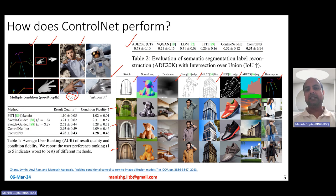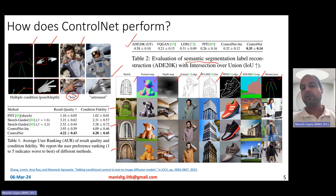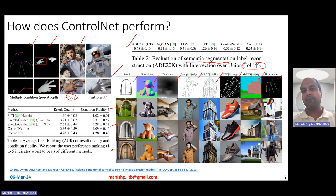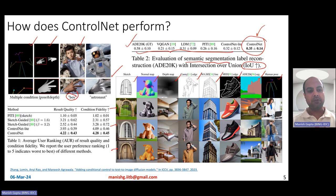For quantitative evaluation, they take segmentation labels of images and ask the model to create images based on those segmentation maps. Once the images are created, they pass them through the same semantic segmentation model and get back the segmentation map. So: start from segmentation maps, generate images using ControlNet, apply a segmentation algorithm, and compare initial and final segmentations via IOU. They found that ControlNet gives way better results compared to other existing baselines in following the control information.